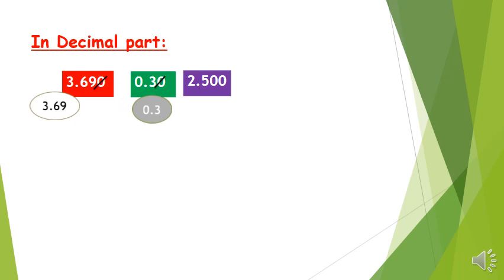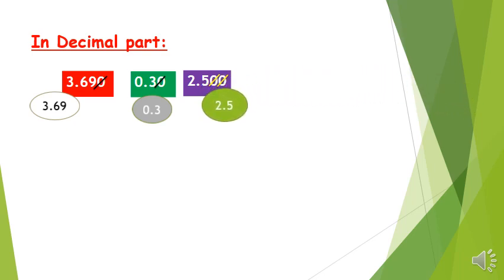In the number 2.500, the decimal part ends with two zeros. These two zeros are useless and 2.500 is equal to 2.5.